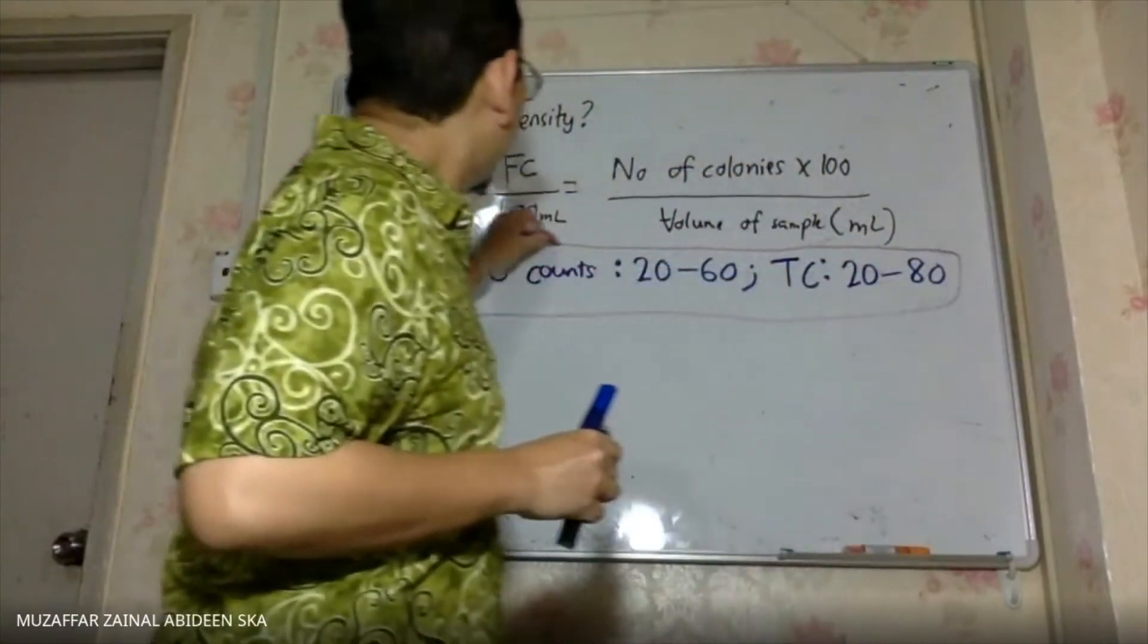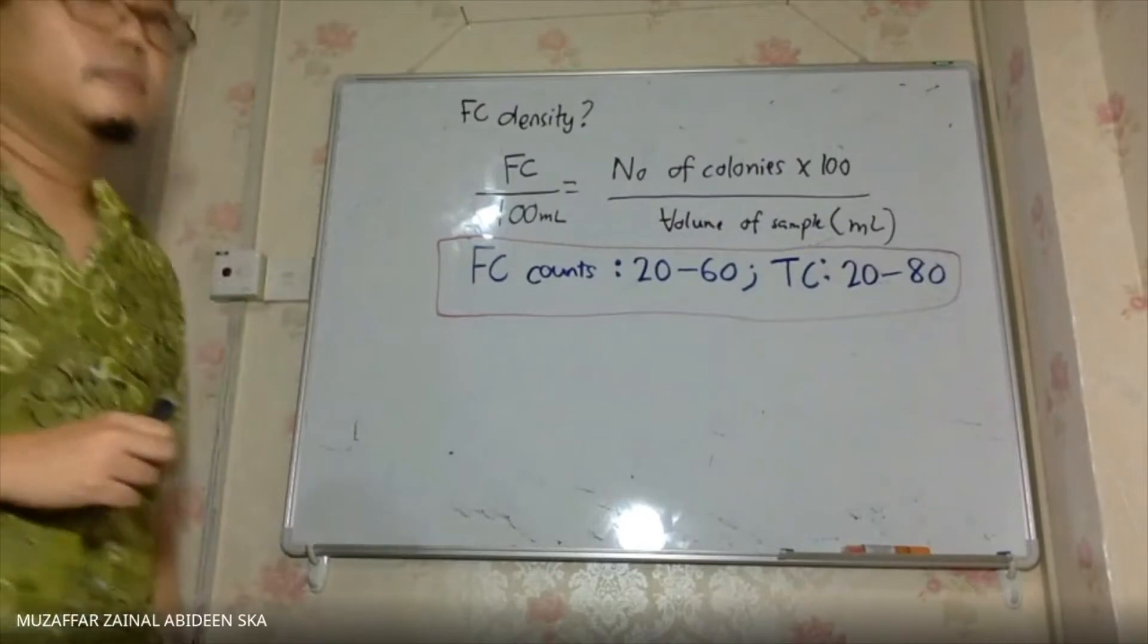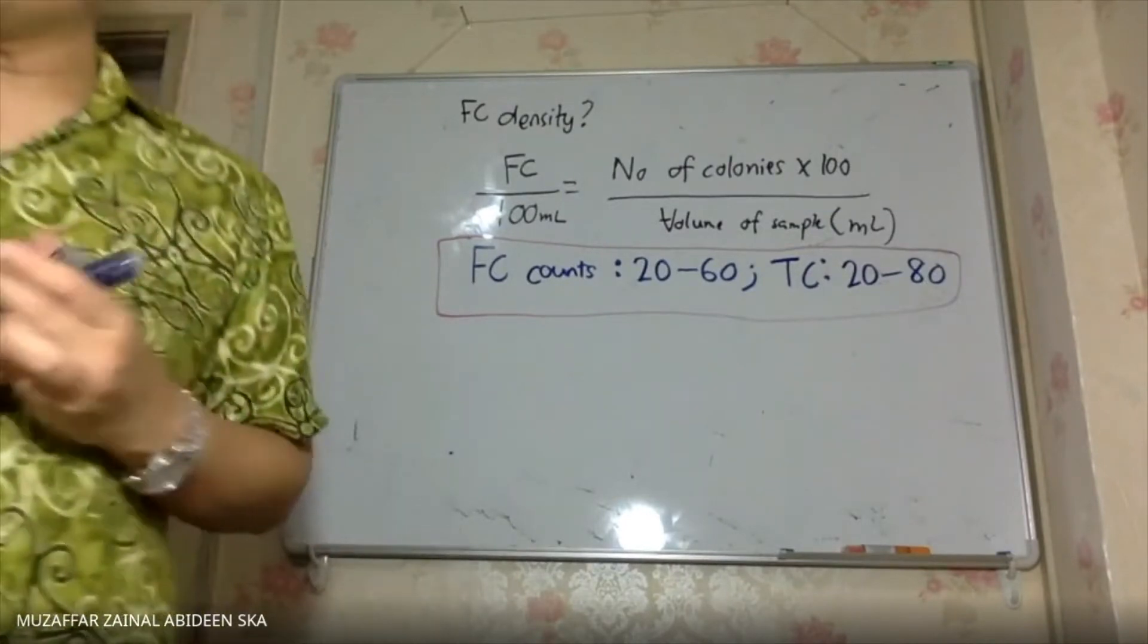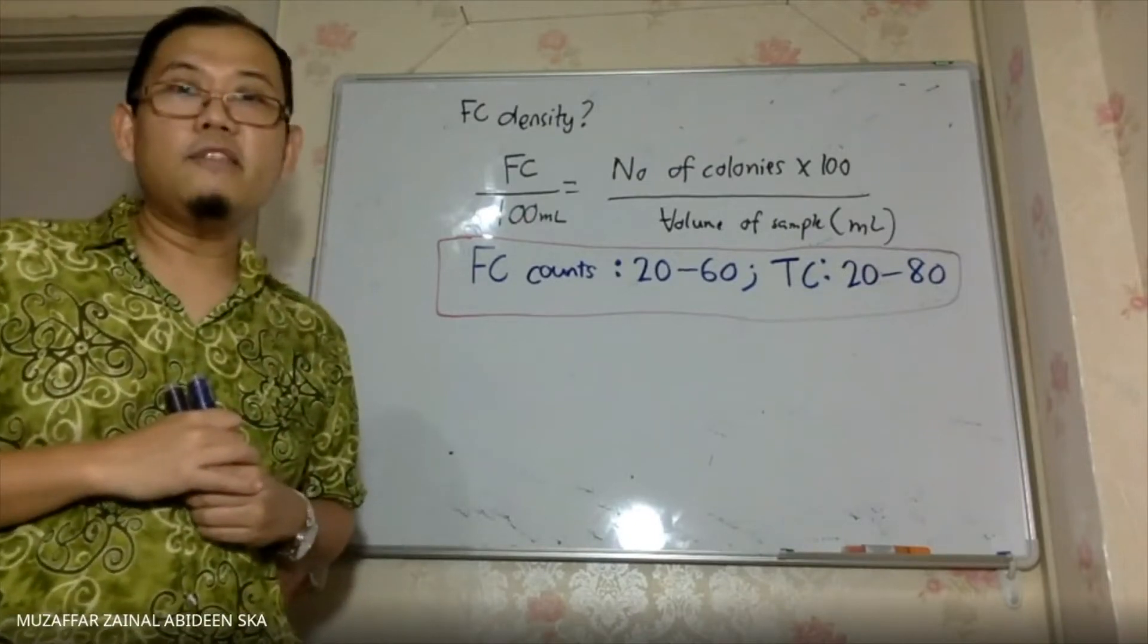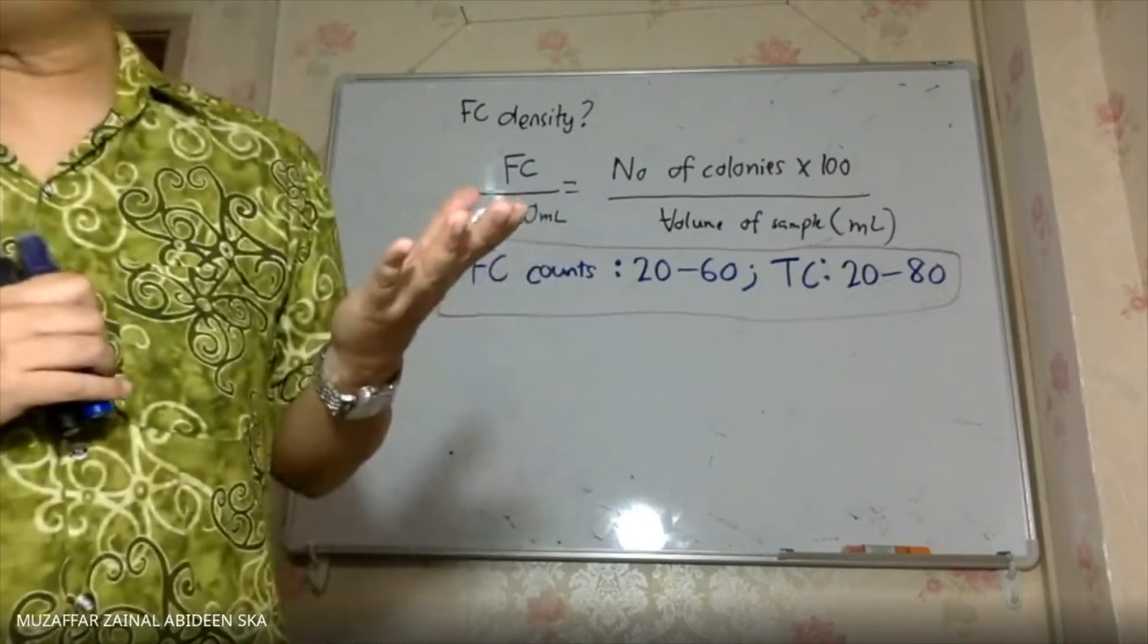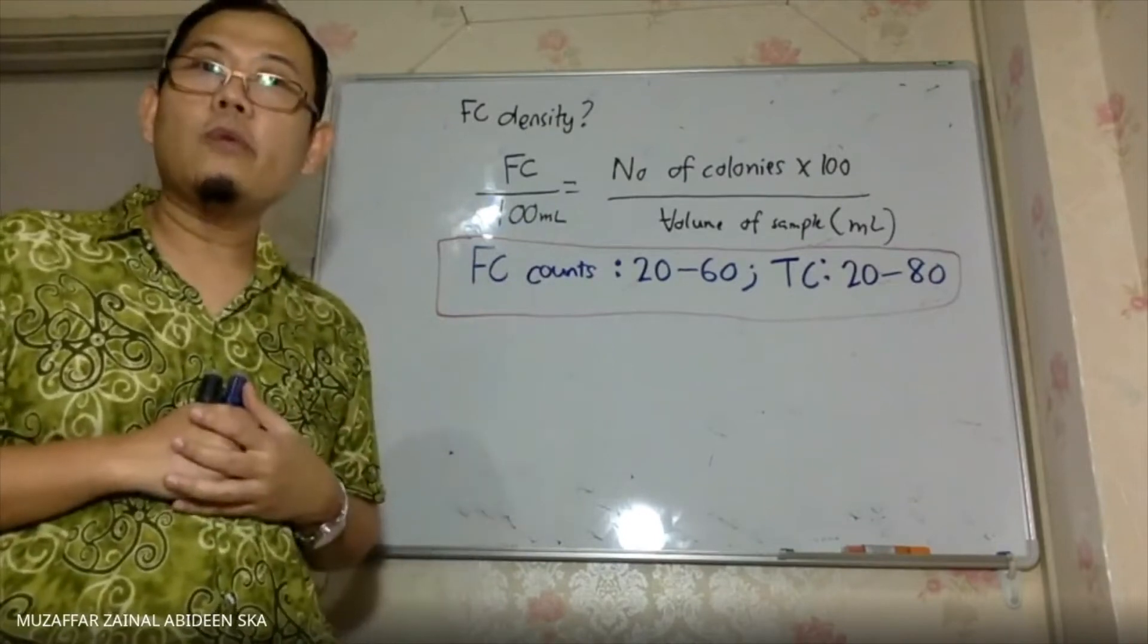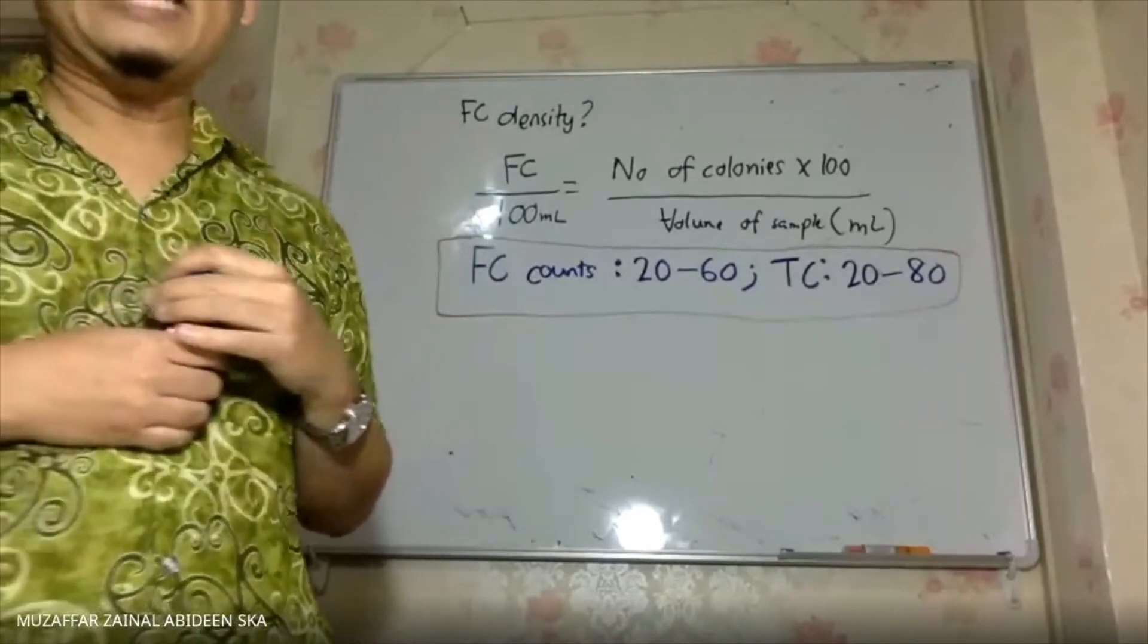When you look at your results, the question just now says when the person filter 75 ml and that person obtained 210 if I'm not mistaken. So is that a valid result? Can we use that result or can we not? Cannot. So we discard the result.